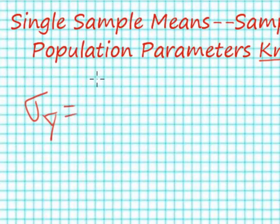This is going to be equal to sigma sub y, not y-bar, divided by the square root of n. So if we know sigma sub y, our population standard deviation, and we know a sample size, we can calculate different standard errors.